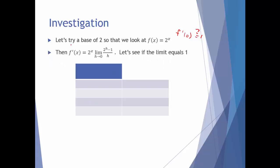To define the derivative for all x, we have 2 to the x times the f prime of 0 using the limit definition — the limit of f of x plus h with 0 substituted in for x, minus f of x, all over h. Let's take a look at this and see if we can get the limit to equal 1 as h approaches 0.